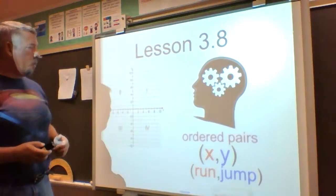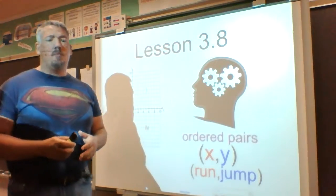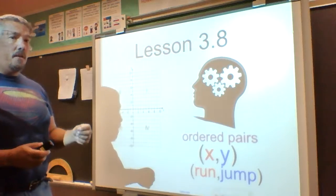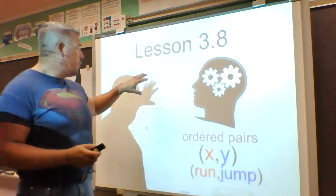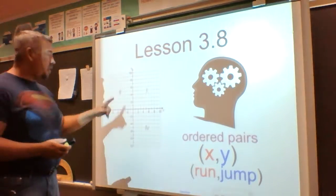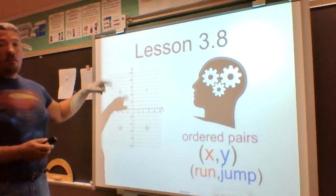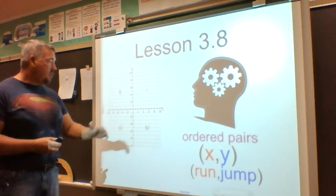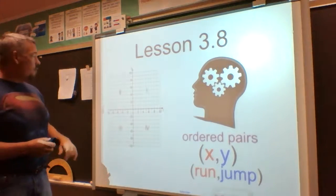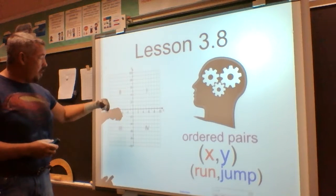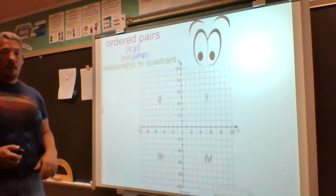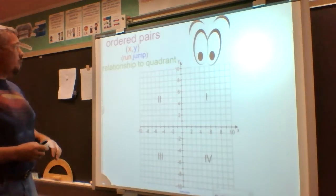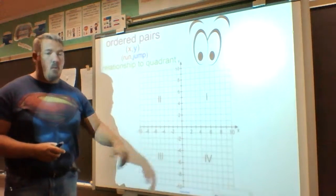In lesson 3.8, we're going to be thinking about the relationships that we have with our ordered pairs. Remember in the last lesson, we learned about ordered pairs — they are our x and y coordinates, our locations in our four quadrants. We get there by running first and then jumping either up or down. Forward on the coordinate plane is positive, backward is negative for the x-axis, and up is positive while down is negative for y.